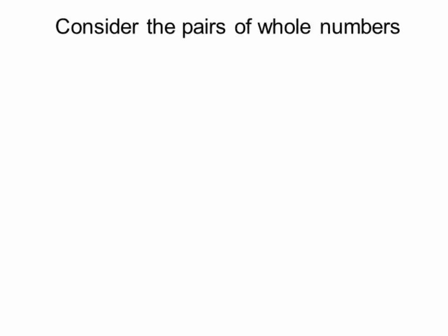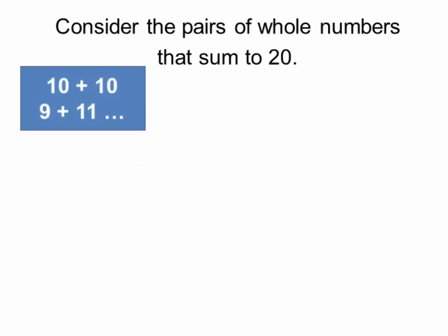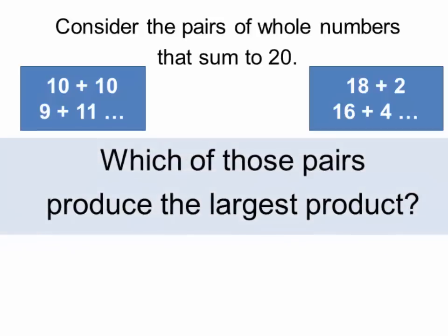So let's try the number 20. We have the same problem: what pairs of whole numbers sum to 20? If we leave 0 out, there's 10 pairs: 10 plus 10, 9 plus 11, 18 plus 2, 16 plus 4. We're not going to list them all, but you can list them on a piece of paper and then multiply them, and which of those pairs will produce the largest product?